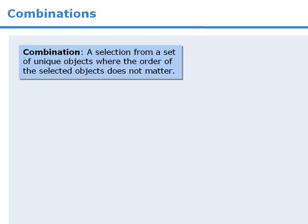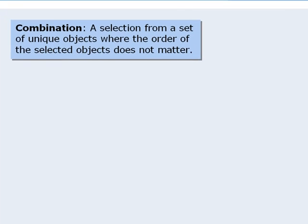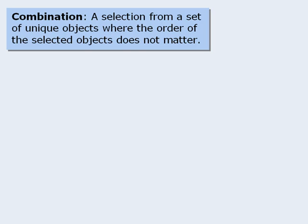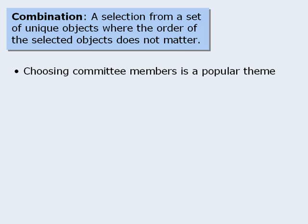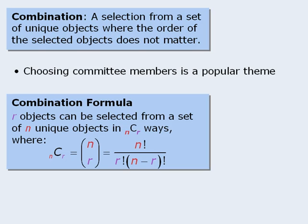Let's summarize. In this lesson, we learned that a combination is a selection from a set of unique objects where the order of the selected objects does not matter. Now on the GMAT, the most common question type involving combinations is one where we must choose individuals to be on a committee. Since the order of the selected committee members does not matter, this will be a combination question. Now to determine the number of combinations, we will use the combination formula. This tells us the number of ways we can select r objects from a set of n objects.